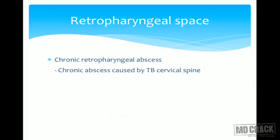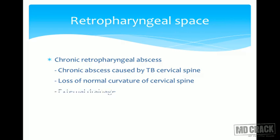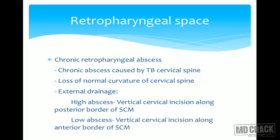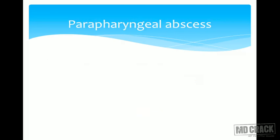Chronic retropharyngeal abscess is caused by tuberculosis of the cervical spine, with loss of normal curvature of the cervical spine. Drainage is done externally: for a high abscess, a vertical incision along the posterior border of the sternocleidomastoid; for a low abscess, a vertical incision along the anterior border of the sternocleidomastoid.